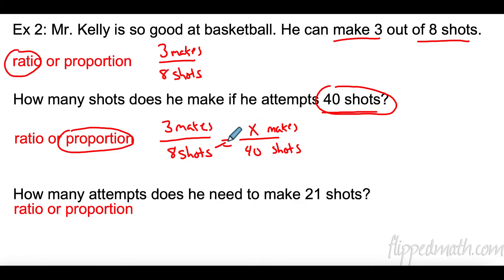I do know that I have to cross multiply. 8 times X is 8X. 3 times 40 is 120. Then I divide both sides. And I get X is 15. So, he would have 15 makes. And again, you need to make sure you label your answer so we know which one we're talking about. 15 makes if he had 40 attempts, 40 shots.